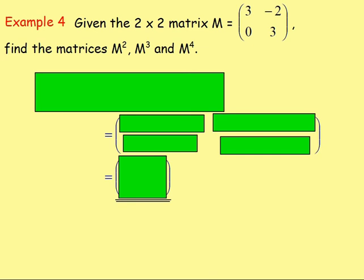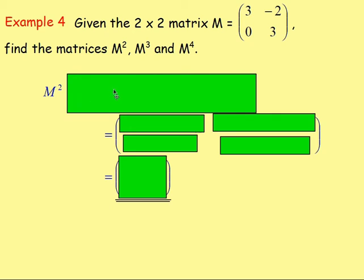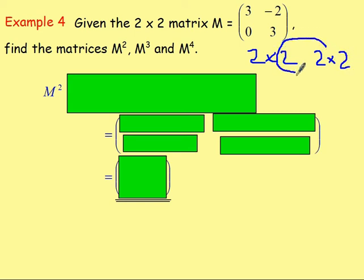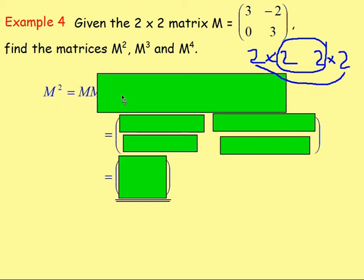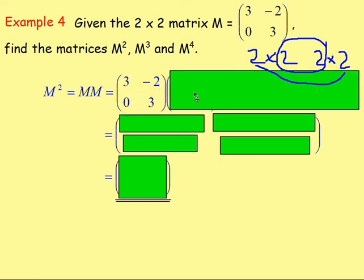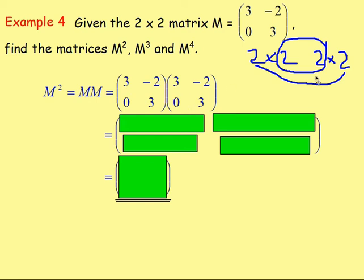Example 4: given the 2 by 2 matrix M = [3, -2; 0, 3], find the matrices M squared, M cubed, and M to the power of 4. To work out M squared, can we? Yes — matrix M is a 2 by 2 matrix, and multiplying it by itself means multiplying by another 2 by 2 matrix. The inner numbers are both 2, so we can work it out, and the resulting matrix will be a 2 by 2 matrix.